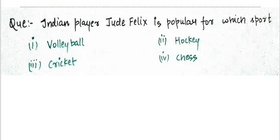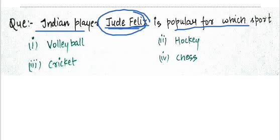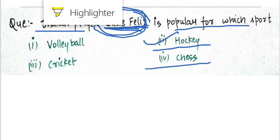Next question: Indian player Jude Felix is popular in which sport? This is a very important question because sometimes we don't remember players and their contribution to a particular sport. Virat Kohli and Rohit Sharma are related to cricket, but Jude Felix is related to hockey. Vishwanathan Anand is related to chess. We need to know about national sports and their players.